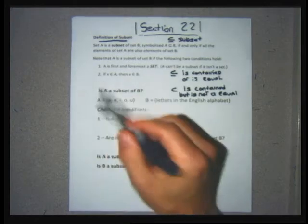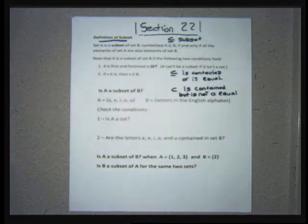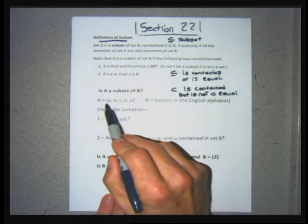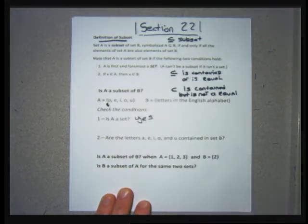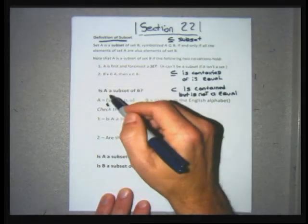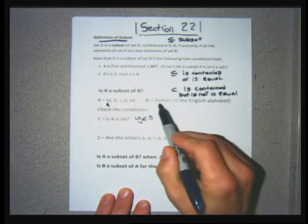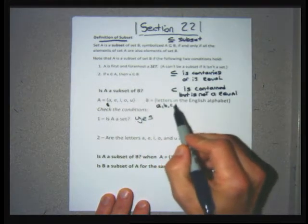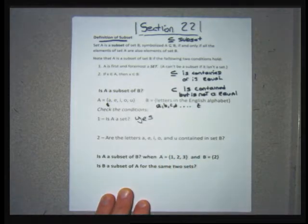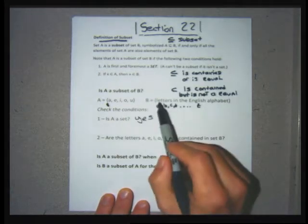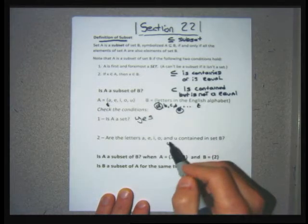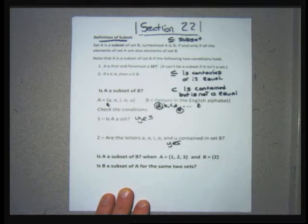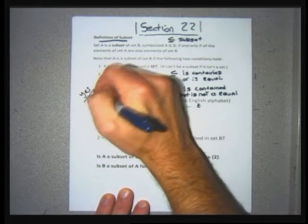Is set A a subset of B? First, A is a set — it's written with set brackets. For it to be a subset, every element in A has to be in B. A has the vowels A, E, I, O, U. B has all letters of the alphabet, A through Z. Every vowel appears somewhere in B, so yes, A is a subset of B.